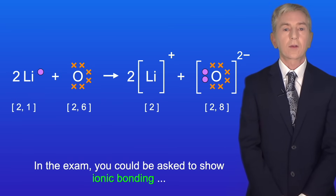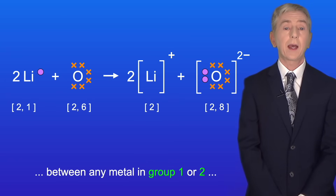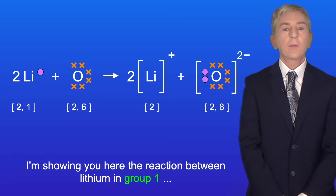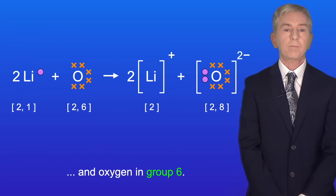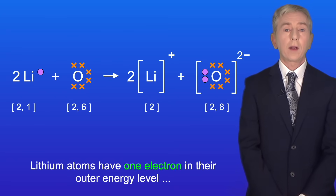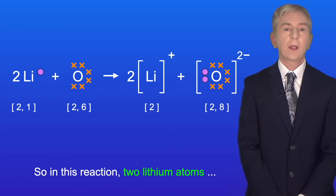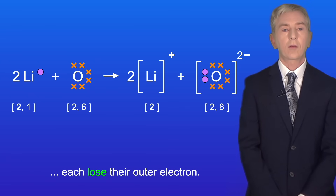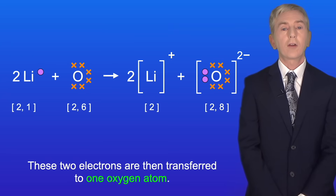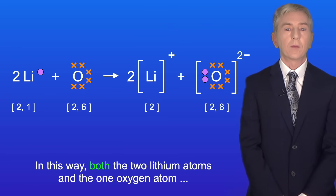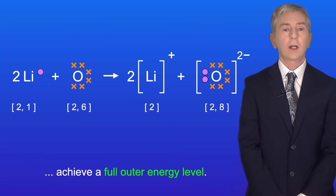In the exam you could be asked to show ionic bonding between any metal in group 1 or 2 and any non-metal in group 6 or 7. Here is the reaction between lithium in group 1 and oxygen in group 6. Lithium atoms have 1 electron in their outer energy level whereas oxygen atoms have 6. So in this reaction, 2 lithium atoms each lose their outer electron and these 2 electrons are transferred to 1 oxygen atom, so both the 2 lithium atoms and the 1 oxygen atom achieve a full outer energy level.